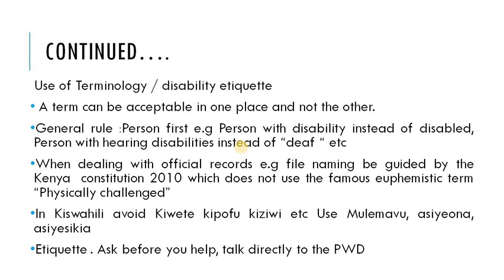When dealing with official records, the guide for naming your files is found in the Kenyan Constitution 2010. The proper official labeling of files for persons with disabilities is there — that is our Bible as far as labeling in the disability world is concerned.